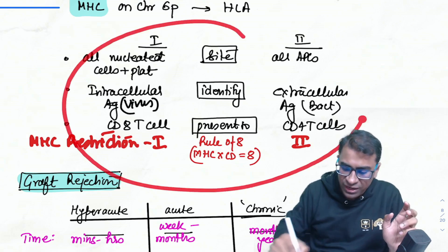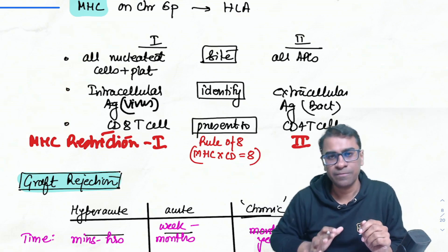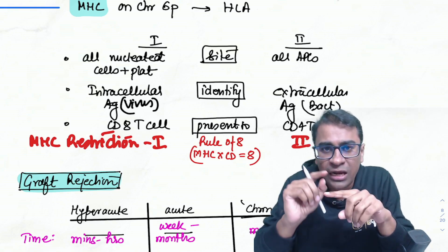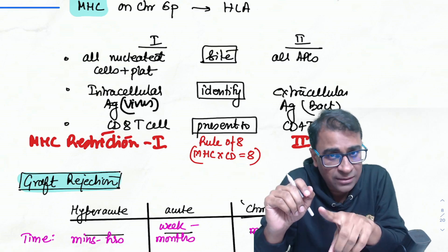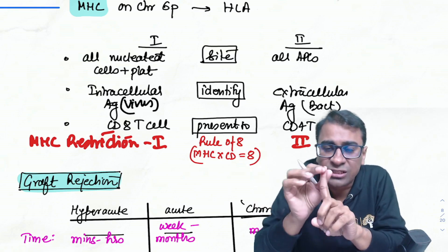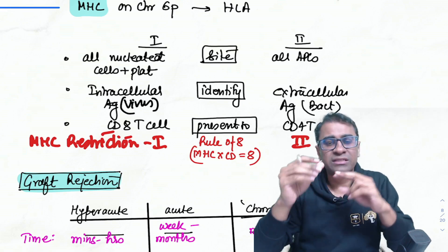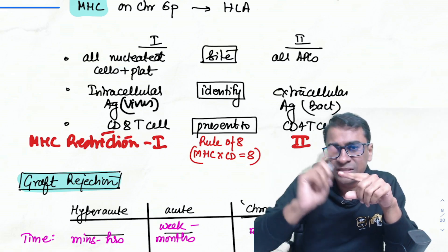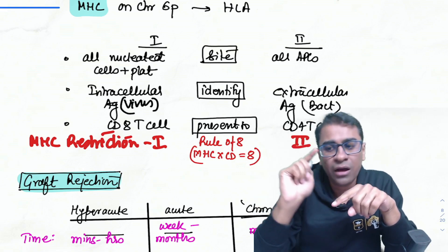MHC restriction means CD8 cells identify antigens only when presented by MHC-1, and CD4 cells only when presented by MHC-2. A question from NICT: if a patient lacks MHC class 2, CD4 cells will not develop — this is called major Bare Lymphocyte Syndrome. If MHC class 1 is absent, CD8 cells don't develop — called minor Bare Lymphocyte Syndrome.